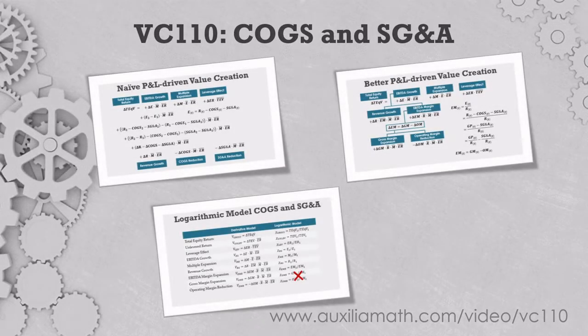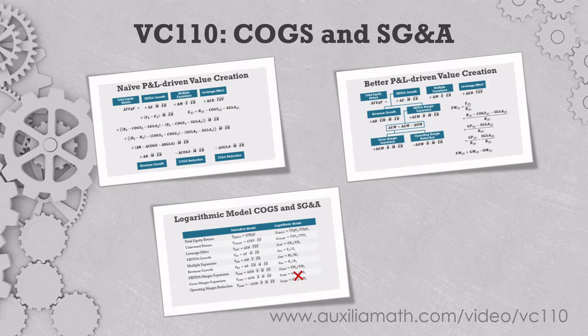Over the last three videos, we talked about the best way to explain how leverage and growth capital drive private equity returns. Next, we plan to measure how broader market forces influence those returns. Before we do that, however, we need to close out the value drivers on the company's income statement and explain returns with changes in COGS and SG&A.